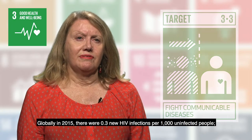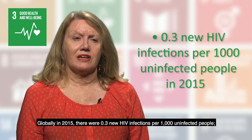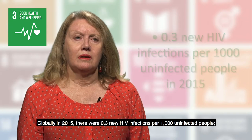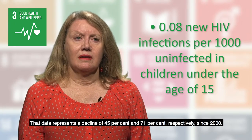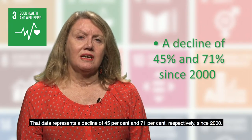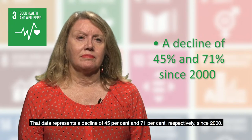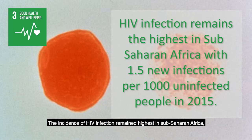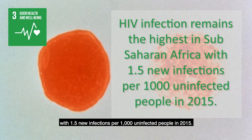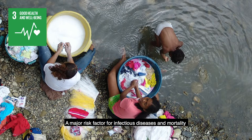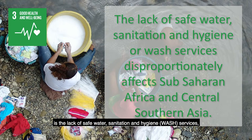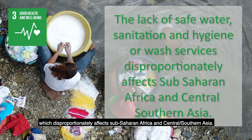Globally in 2015, there were 0.3 new HIV infections per 1,000 uninfected people. Among children under 15 years of age, there were 0.08 new HIV infections — a decline of 45% and 71% respectively since 2000. The incidence of HIV infection remained highest in sub-Saharan Africa, with 1.5 new infections per 1,000 uninfected people in 2015. A major risk factor for infectious diseases and mortality is the lack of safe water, sanitation and hygiene (WASH) services, which disproportionately affect Sub-Saharan Africa and Central Southern Asia.